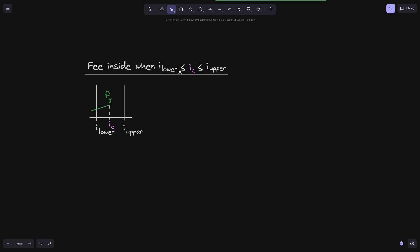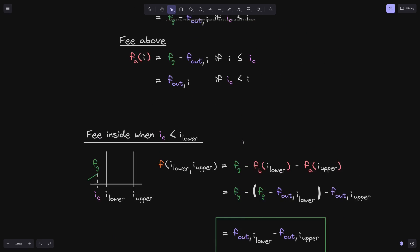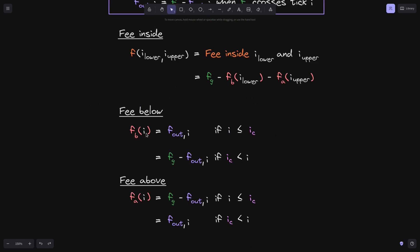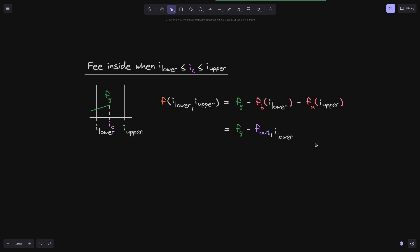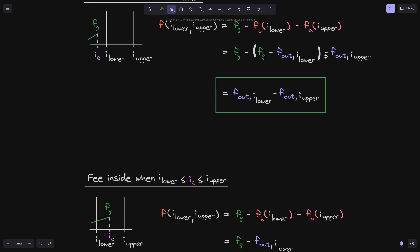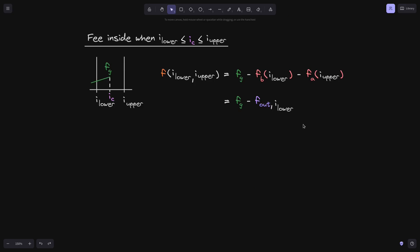For the case when i_c is between i_lower and i_upper: f_g stays as f_g. Since i_c is now greater than or equal to i_lower, f_b(i_lower) equals f_out(i_lower). Since i_c is still less than i_upper, f_a(i_upper) still equals f_out(i_upper). So phi inside again takes the form f_g minus f_out(i_lower) minus f_out(i_upper).